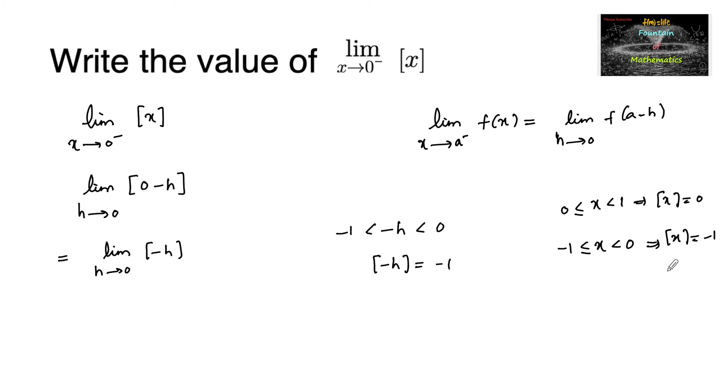So we can give the answer minus 1. Limit h tends to 0 [−h] value will be minus 1. The answer is minus 1 because it's independent of h. So the value of limit x tends to 0 minus [x] is minus 1.